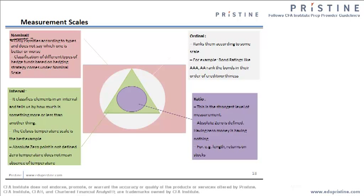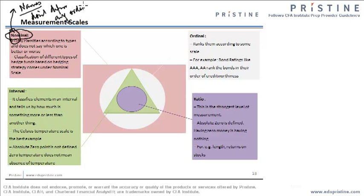Let us start with the first one. The first one is the nominal scale, which classifies things according to their names. It does not define any priority or any order. So suppose in my class, Bob is sitting here, Akash is sitting, and Dennis is sitting. I cannot say that Bob is more intelligent than Dennis and Dennis is more intelligent than Akash. So if I cannot define that, I have simply named these people — this becomes a nominal scale. It does not define any order.